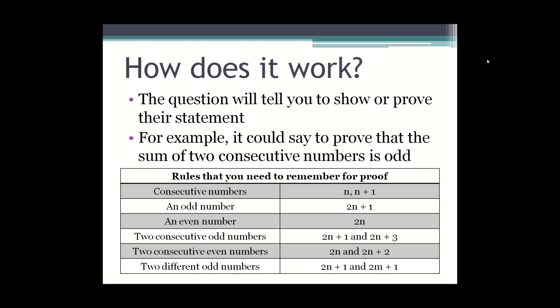And if you have two different odd numbers like 7 and 15, you'll write it as 2n plus 1 and 2m plus 1.